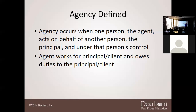Agency occurs when one person — the agent — acts on behalf of another person, the principal, and under that person's control. The principal controls the agent, not the other way around. A lot of people assume that as the agent I control my principal — that's incorrect. The agent works on behalf of that individual.